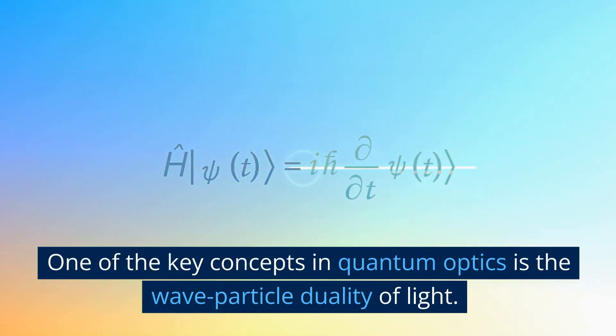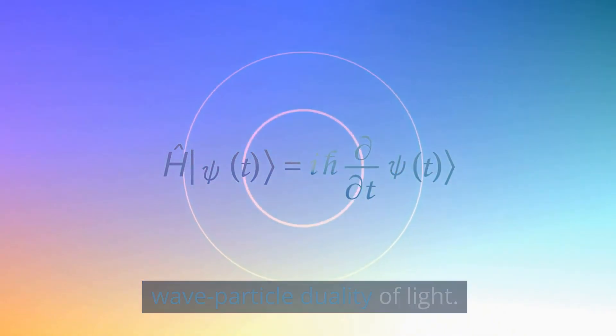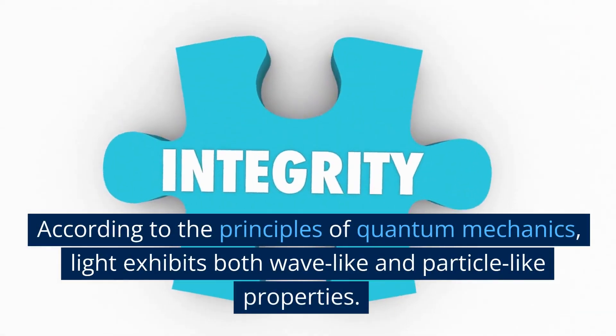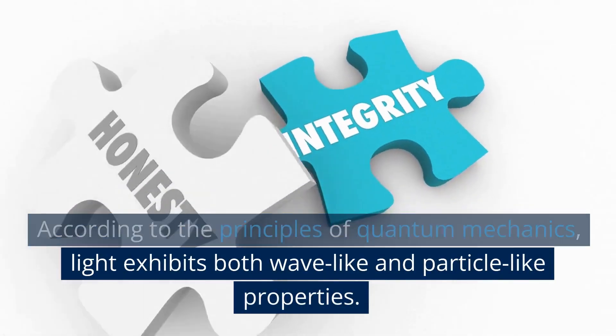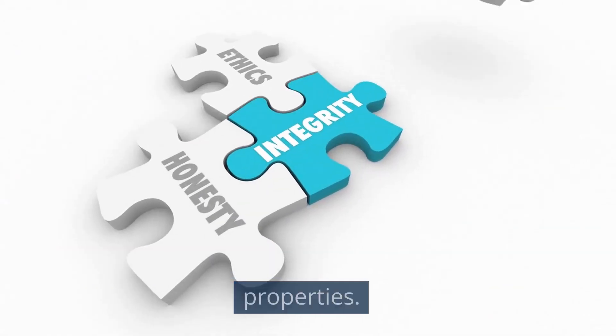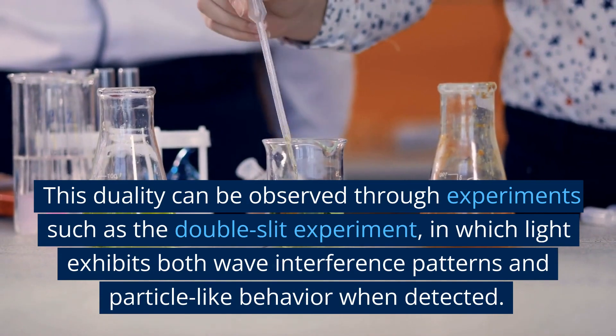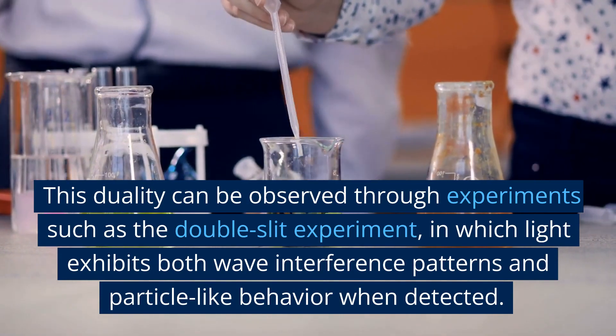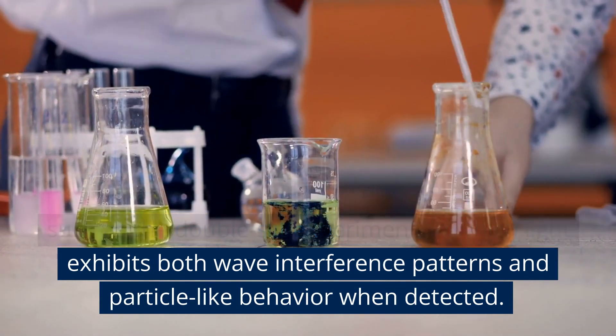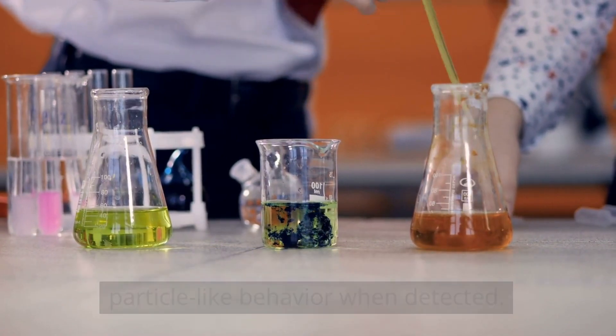One of the key concepts in quantum optics is the wave-particle duality of light. According to the principles of quantum mechanics, light exhibits both wave-like and particle-like properties. This duality can be observed through experiments such as the double-slit experiment, in which light exhibits both wave interference patterns and particle-like behavior when detected.